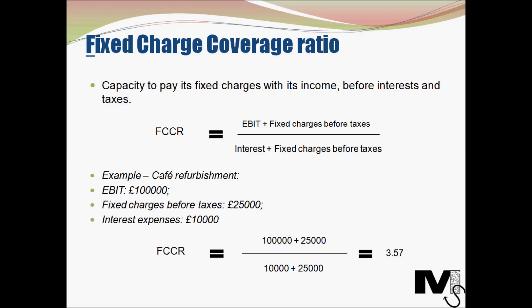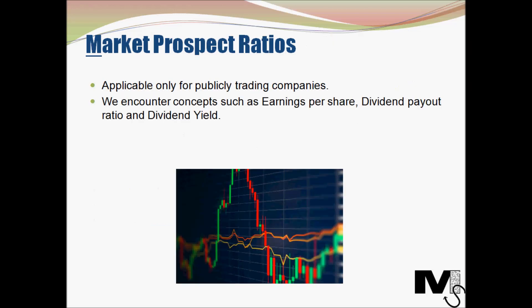Now let's look at another couple of useful financial ratios. Market prospect ratios are specific ratios applicable only to publicly traded or listed companies. These ratios compare current stock prices with other financial measures like earnings and dividend rates, helping investors get a measure of future stock values, stock trends, and projected dividend values. Within this ratio type, we encounter concepts such as earnings per share, dividend payout ratio, and dividend yield.